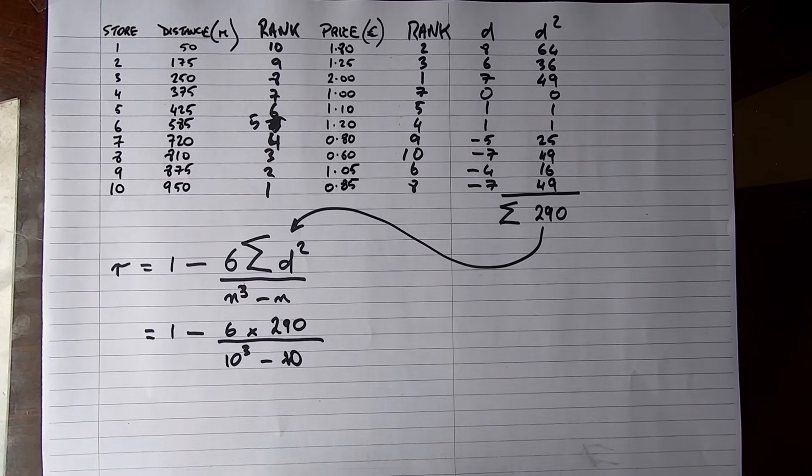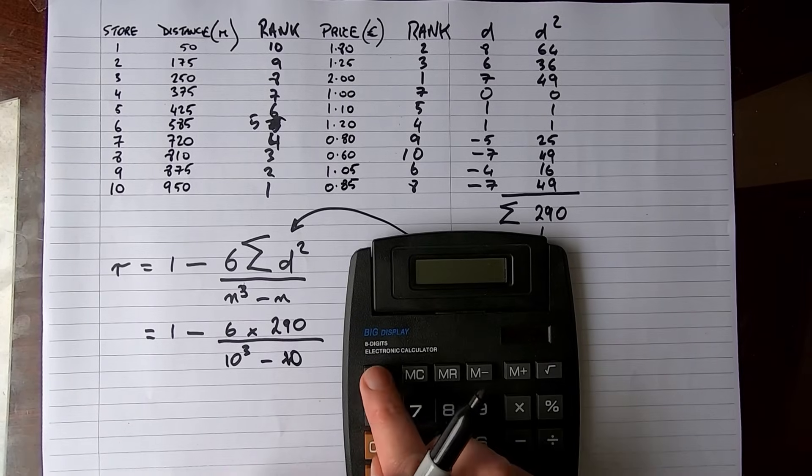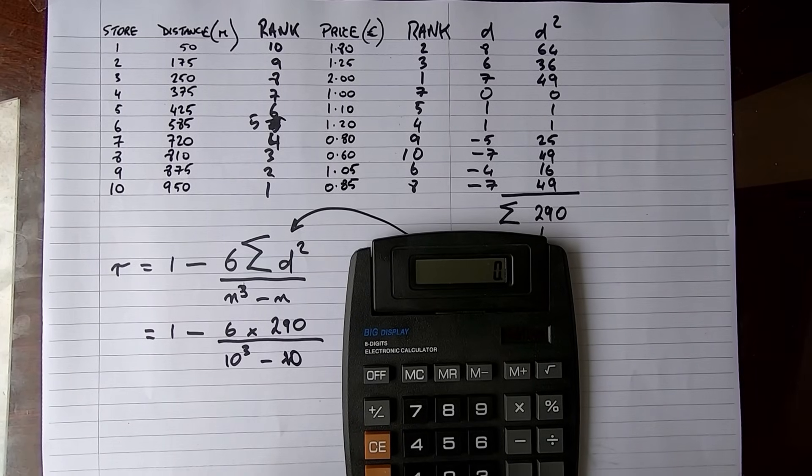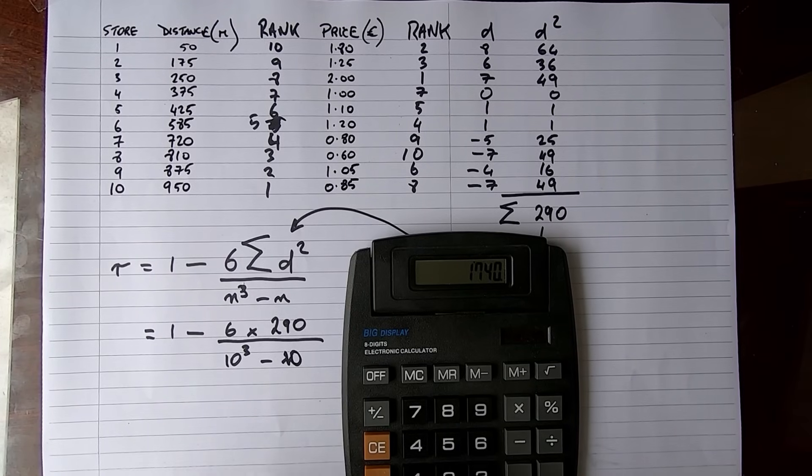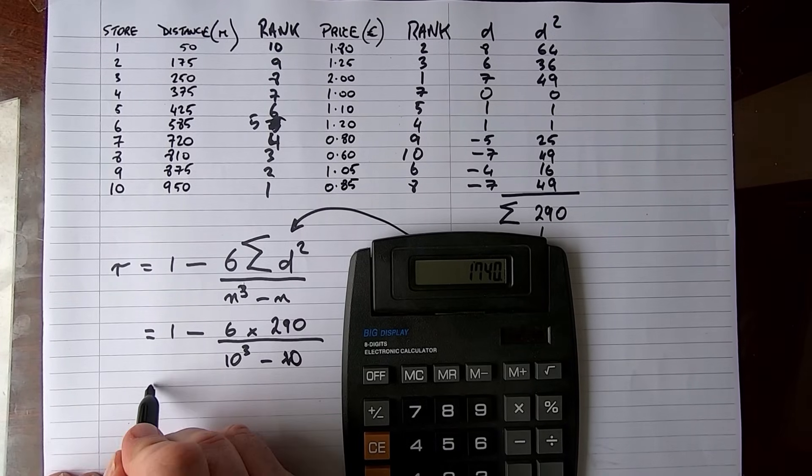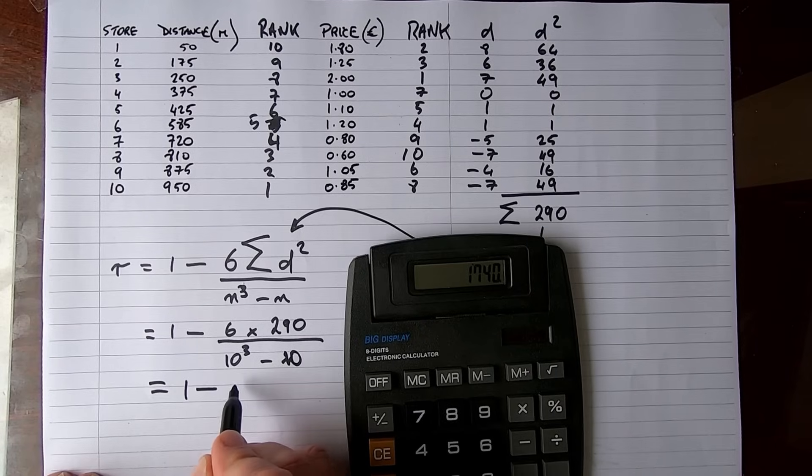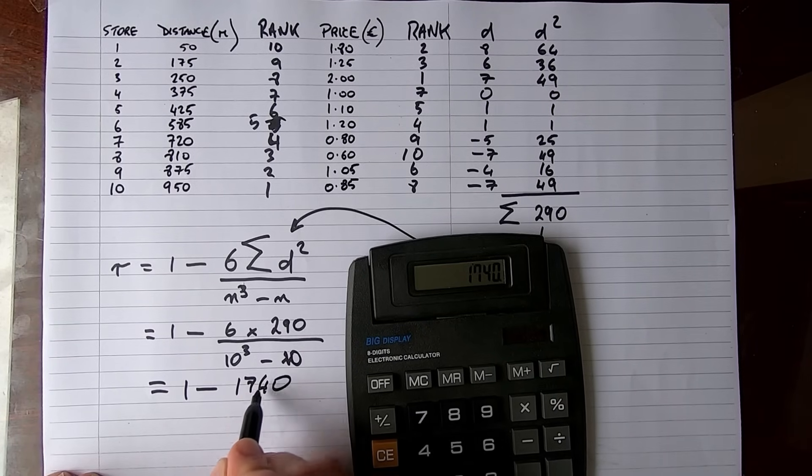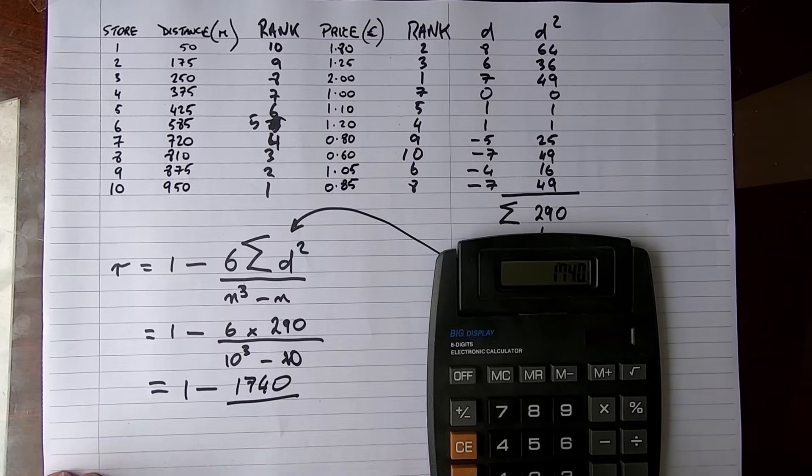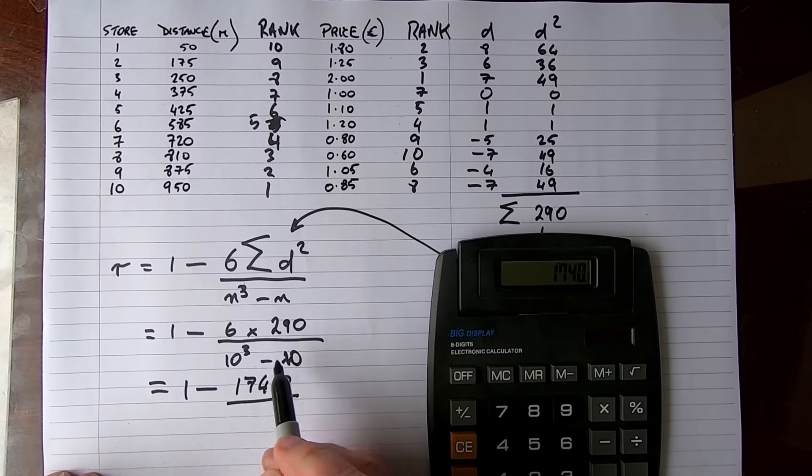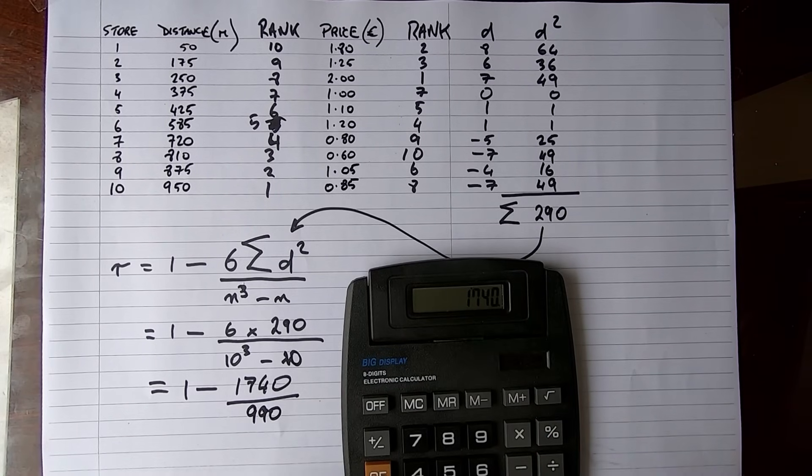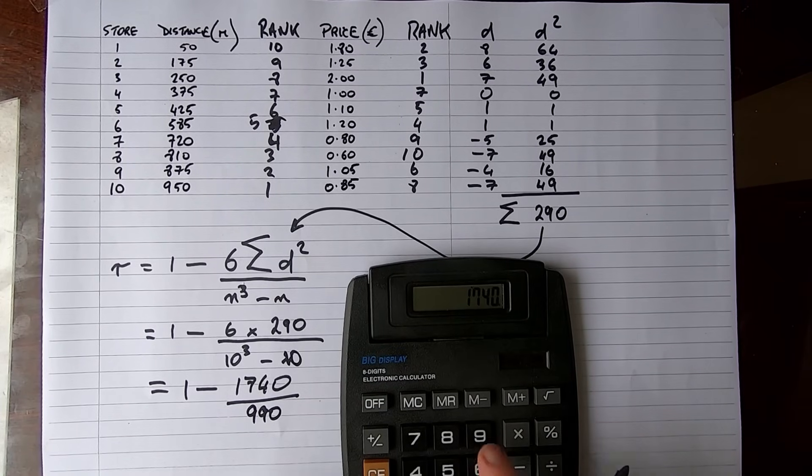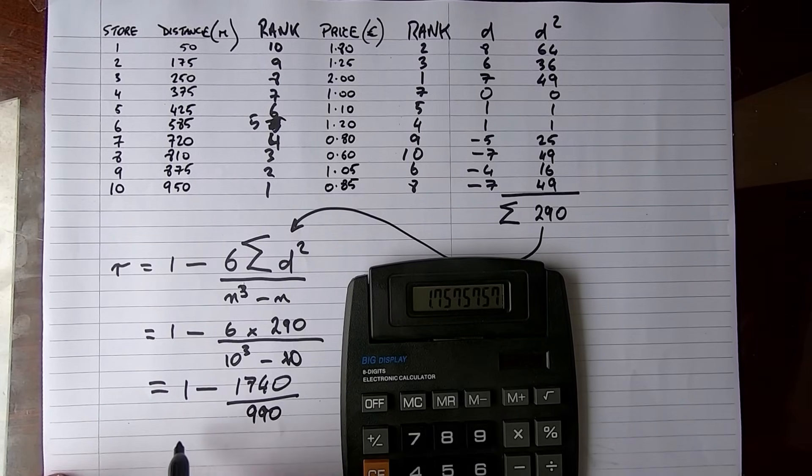So now we can work this out. I'm going to need my calculator for this. So 6 times 290, that's equal to 1740. So my formula again to write it out is equal to 1 minus 1740. And the bit underneath I'll do in my head: 10 cubed is 10 by 10 by 10, which is 1000, minus 10, which is 990.